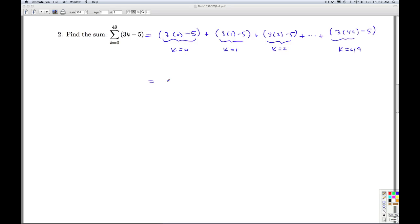So I have to add negative 5, plus negative 2, plus 1, plus all the way down to k equals 49. So what's 3 times 49? That'd be 120 and 27. So that'd be 147 minus 5 would be 142. Okay, now, I don't let you use calculators on the test. So there's got to be something more to this than just adding these up brute force.